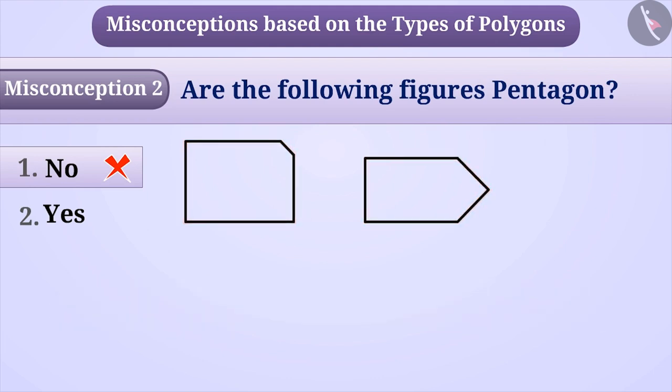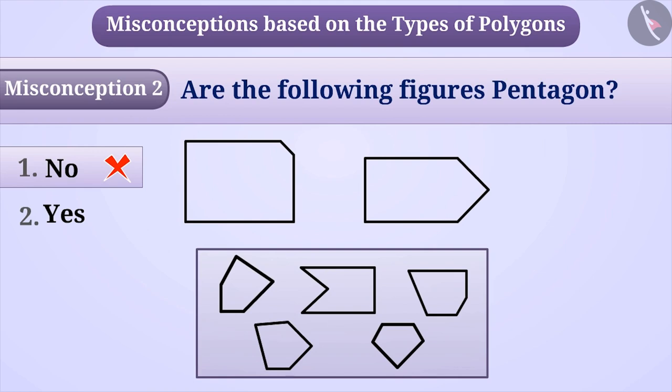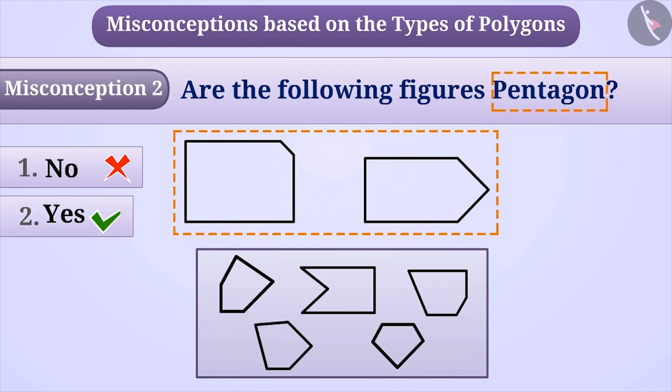The correct understanding is that if a polygon is made up of 5 sides, then it is a pentagon. We can make different types of polygon with 5 sides. They are all pentagons. Therefore, the given figures are also pentagons. So, the correct answer is option 2.